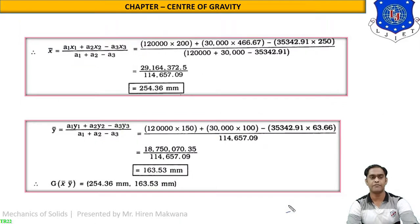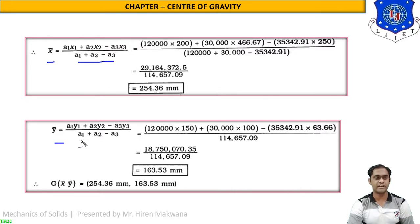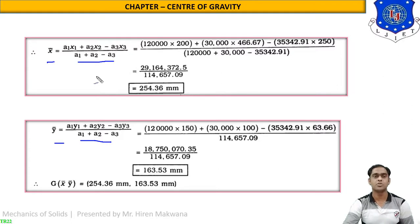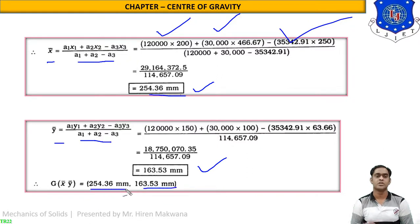Replacing all values into the formulas — x̄ = (A1·x1 + A2·x2 − A3·x3) / (A1 + A2 − A3) and ȳ = (A1·y1 + A2·y2 − A3·y3) / (A1 + A2 − A3), remembering that part 3 is subtracted — we get x̄ = 254.36 mm and ȳ = 163.53 mm.